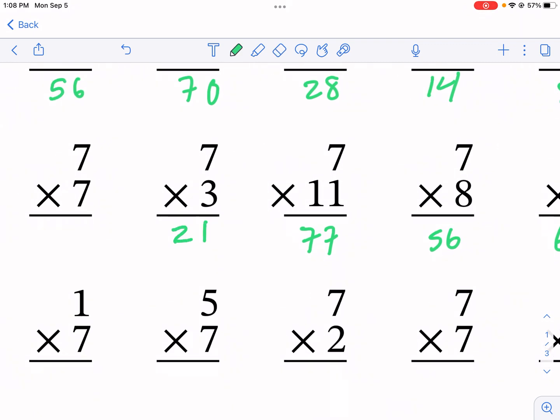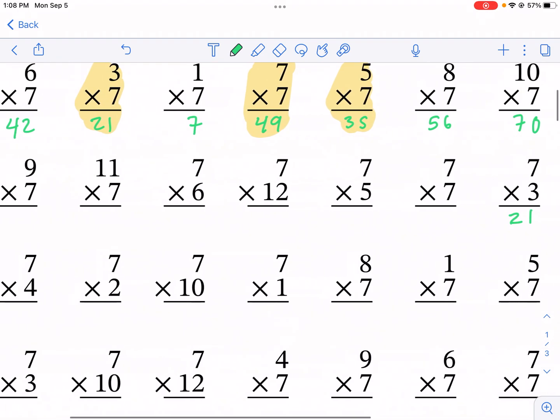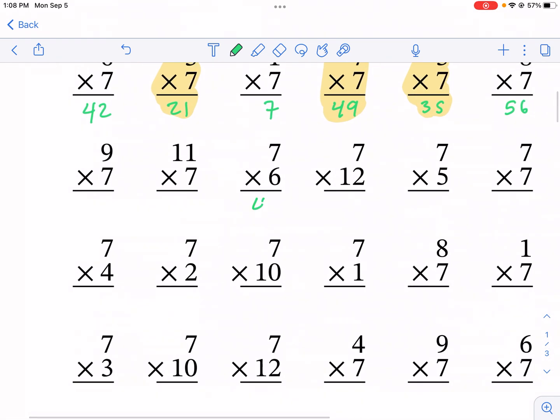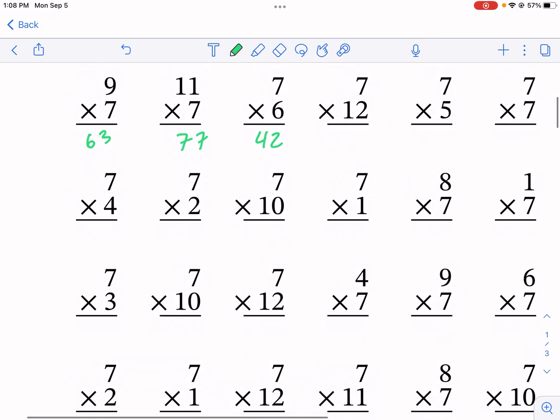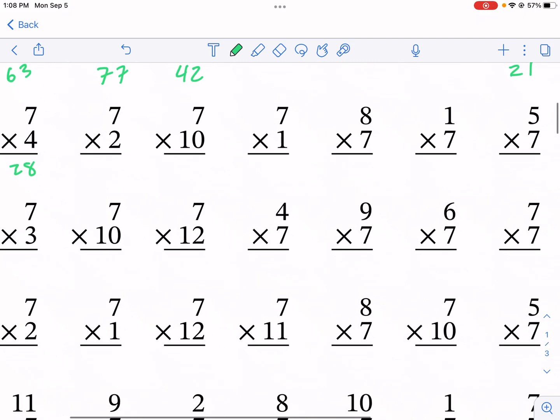7 times 3, I already said that one. That's one of your need-to-knows. And I'm trying to see if there's anything we haven't done. This is 42, 63, 77. I'm trying to see here. 28, we already did. I think that's everything.